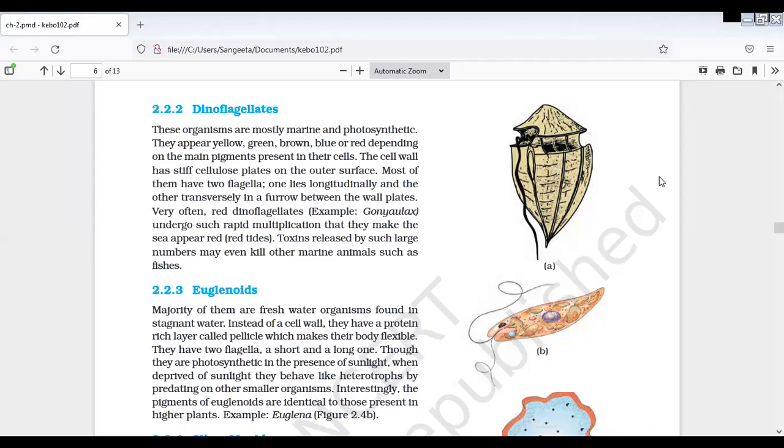Dinoflagellates have two flagella at right angles. Dinoflagellates have two flagella, are mostly marine and photosynthetic in nature. We also have a plant-like protista.